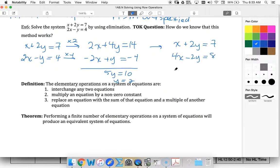If I had added those, I would have ended up with 5x equals 15 and x equals 3. So notice I've used elimination to have a solution of x equals 3, y equals 2.